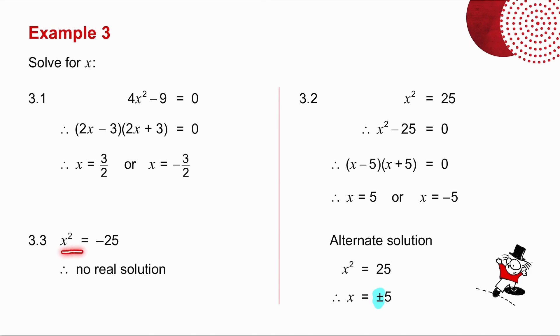In 3.3, you were given x squared is minus 25. Now you've got to think, what times itself is negative 25? Well, 5 times 5 is 25. Minus 5 times minus 5 is 25. What times itself is minus 25? There is no real value. No real number, when multiplied by itself, will give you a negative. So your answer to this is no real solution.